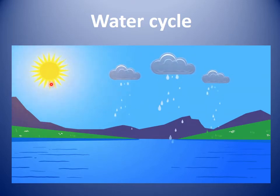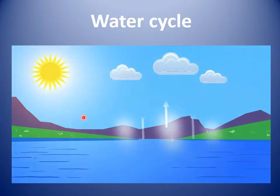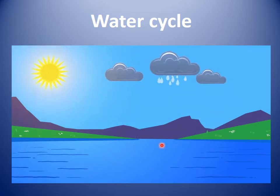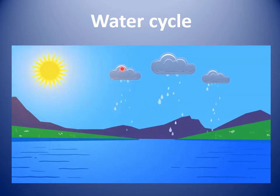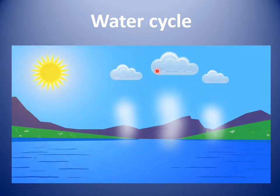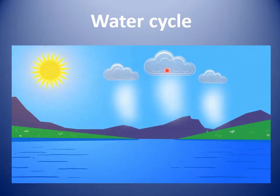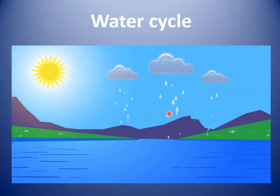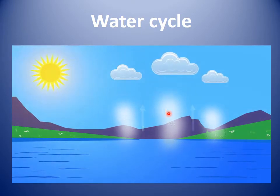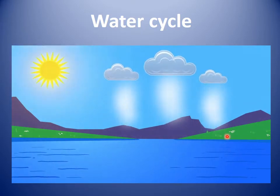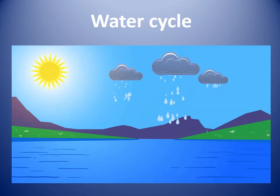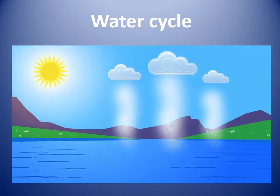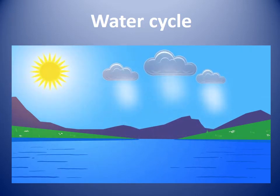So again, the water cycle: when the sun rays fall on the water, the water begins to evaporate — this is called evaporation. When we have many clouds, this is called condensation. When the cloud begins to fall down as rain, this is called precipitation. When the water goes back to the sea in groups, this is called collection.